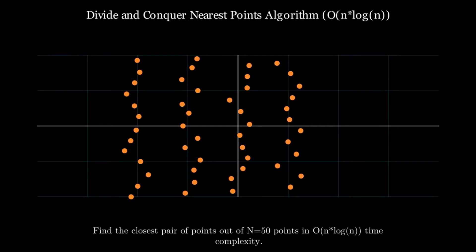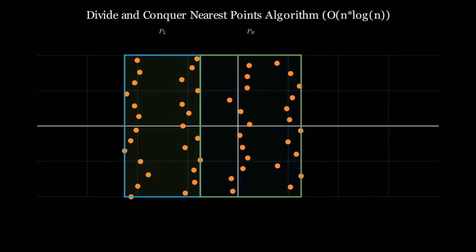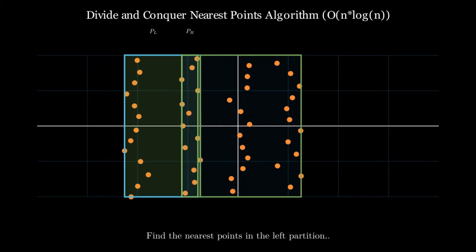First, we'll perform the divide in the divide-and-conquer algorithm by splitting the points into two partitions. We'll start by searching the left partition. We'll continue repeating this divide-and-conquer process, splitting the partition into two smaller partitions of equal population, until we reach a base case.